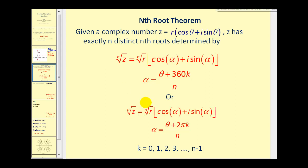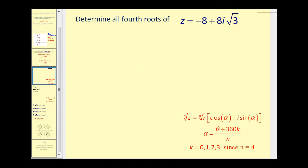There's a lot going on, but let's break it down into small steps and apply it. Let's determine all of the fourth roots of z = −8+8i√3. The first thing to recognize is that since we want the fourth roots, n = 4.